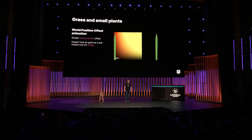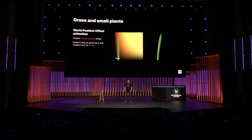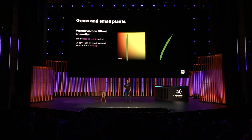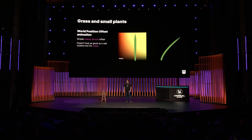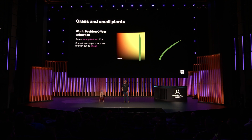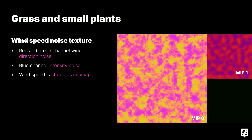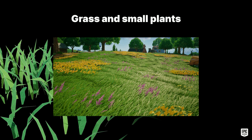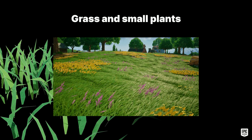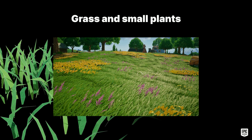We also optimized our world position offset shader for grass animation. For all grass and small plants, we use a single generic lookup texture with a baked offset — it doesn't look as good as a real rotation, but it's very cheap. We optimized our wind speed and noise textures: in the red and green channels we store directional noise for the wind, in the blue channel an intensity noise, and we store wind speed itself as a mipmap. This allows us to blend between different wind speeds just by blending between two mipmaps. The result is really high-detailed grass where each blade is modeled and we have nice animations.